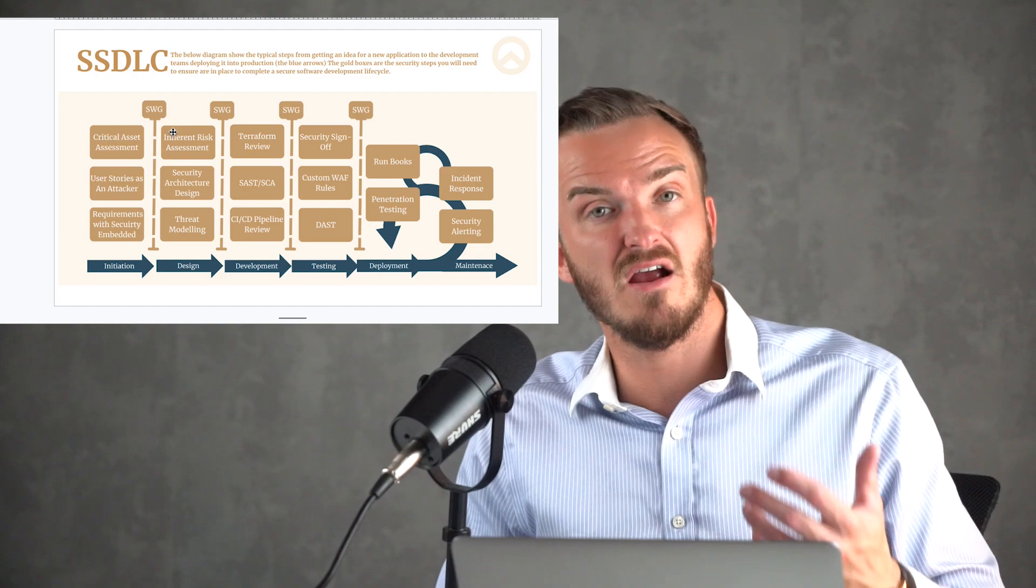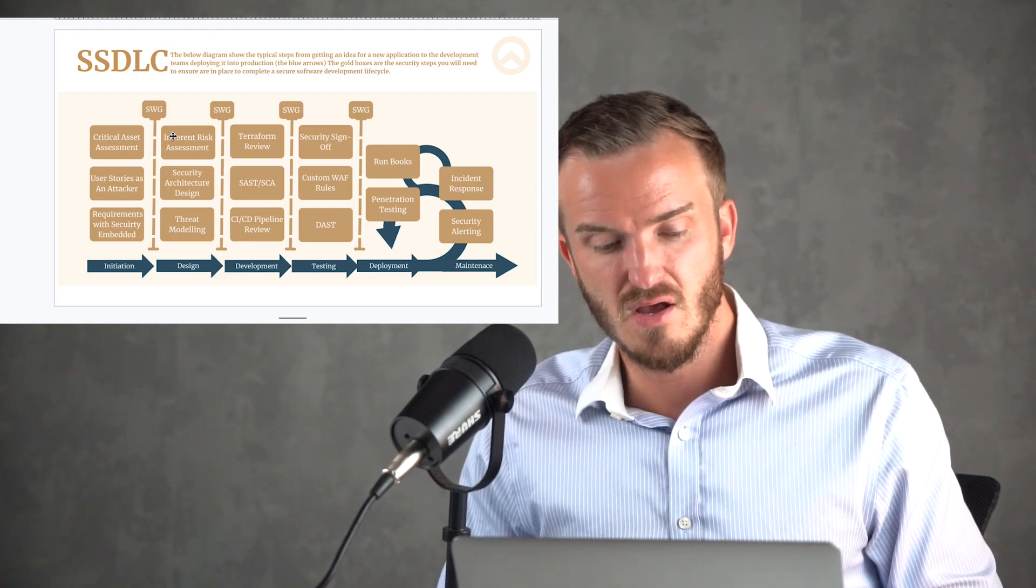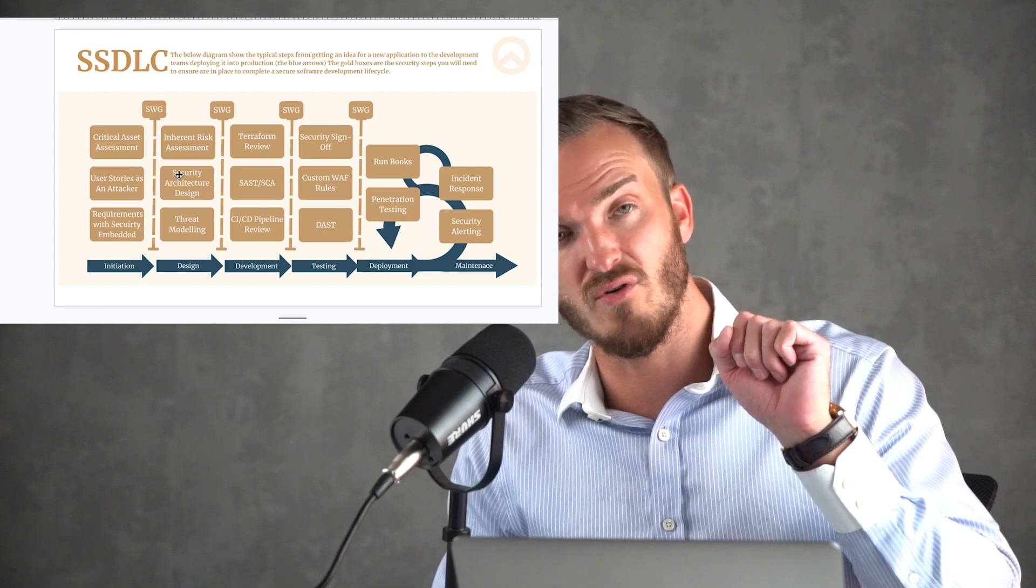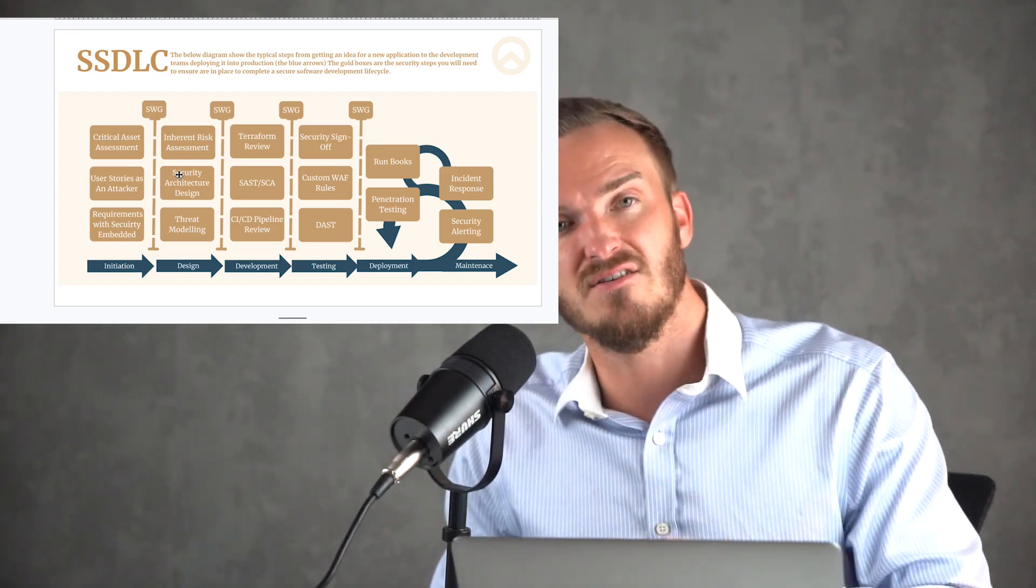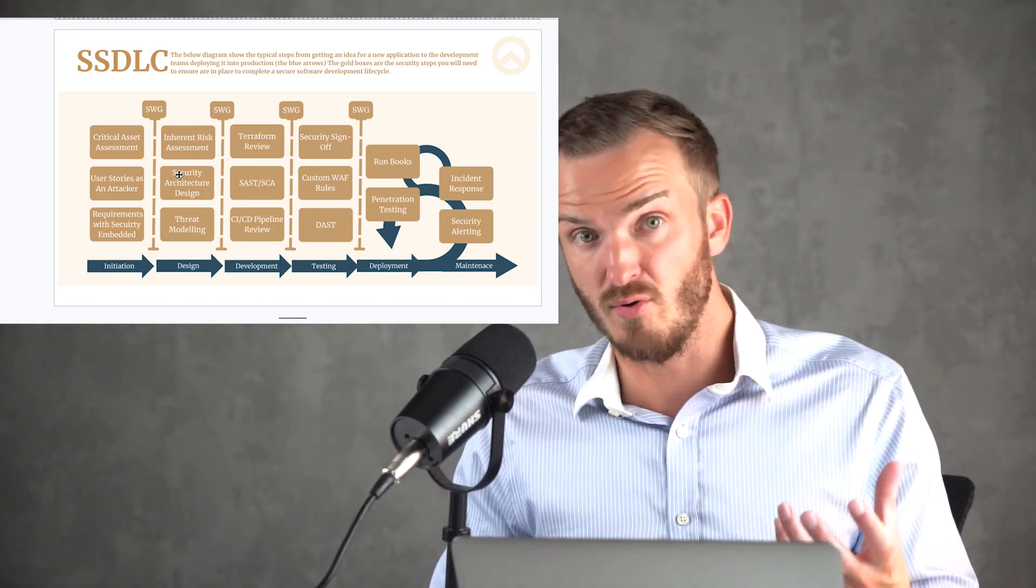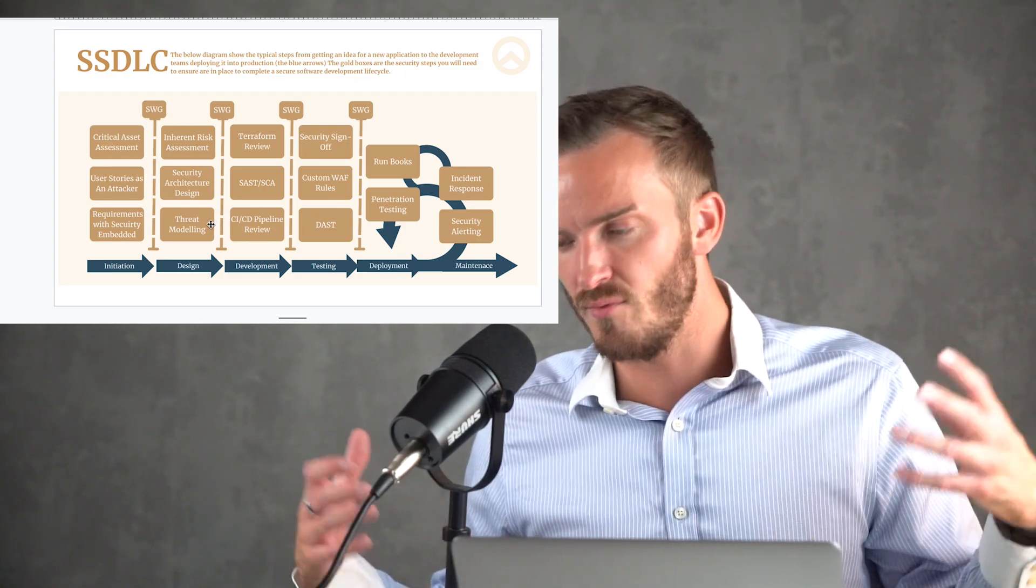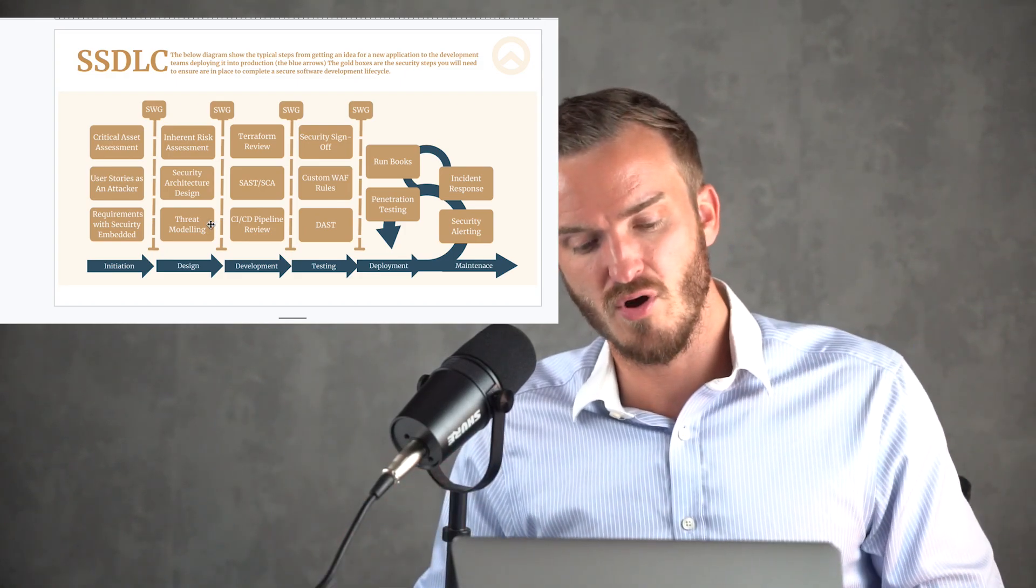Then in the design phase, we'll do the inherent risk assessment, as you've all done. We then do a security architecture design review, which includes reviewing the high-level diagrams and the data flow diagrams from a security perspective or building our own and working with the team to do that. Then we'll run a threat modeling workshop. Once we've designed the app and we know what it's looking like, we get the team together, we run the threat modeling workshop.